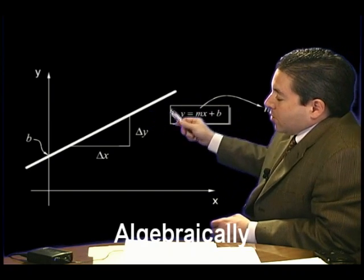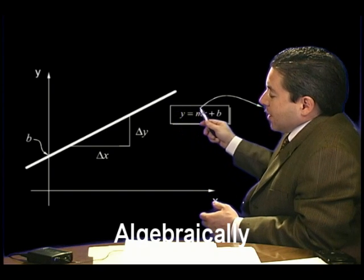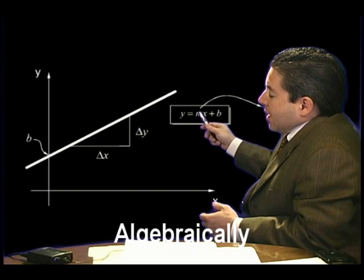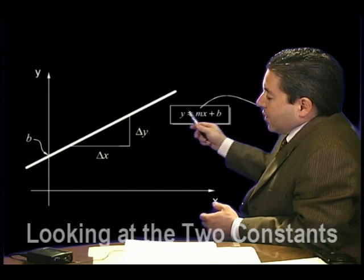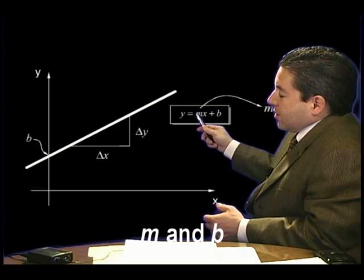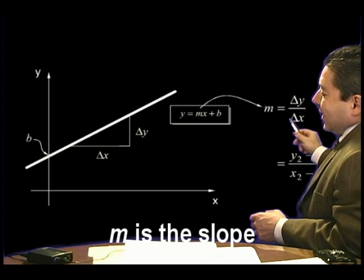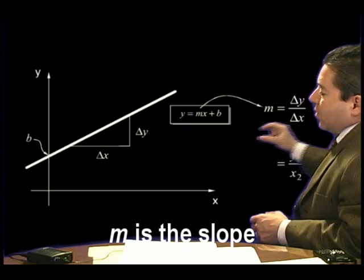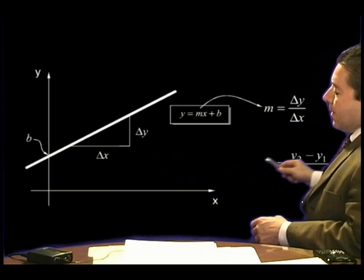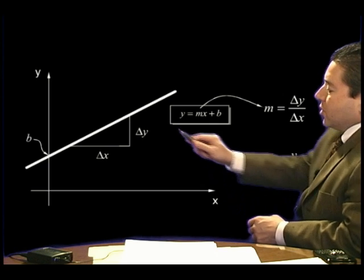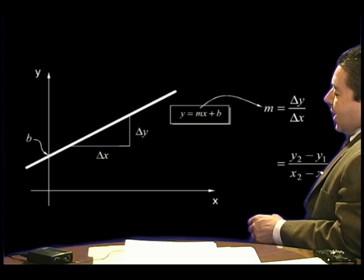Let's look at the algebra underlying a straight line or a linear equation. As mentioned, it's Y equals MX plus B. Let's evaluate these two constants. X is the input variable, Y is the output variable, but M and B are the constants. M, also known as the slope, is equal to delta Y over delta X — the change in Y, the output variable, related to the change in X, the input variable. That, for two positions two and one, is Y2 minus Y1 over X2 minus X1.